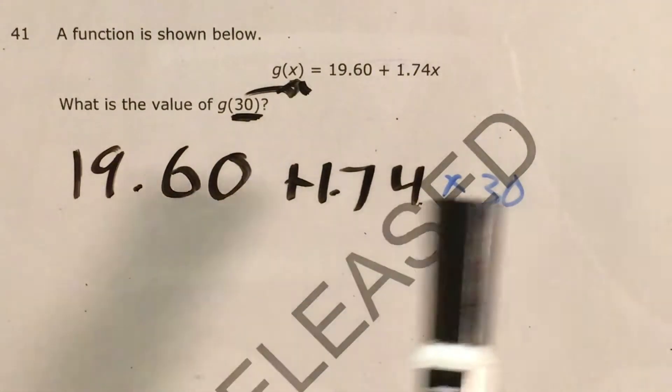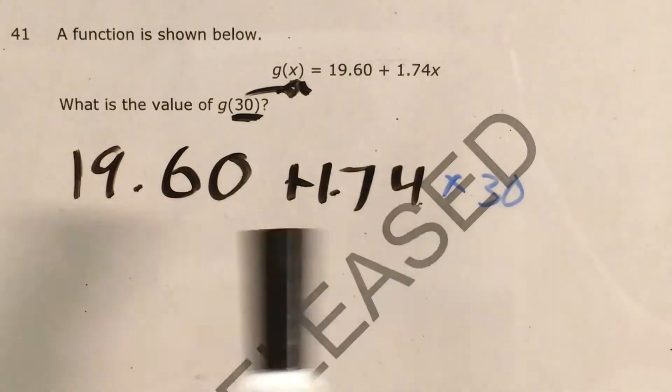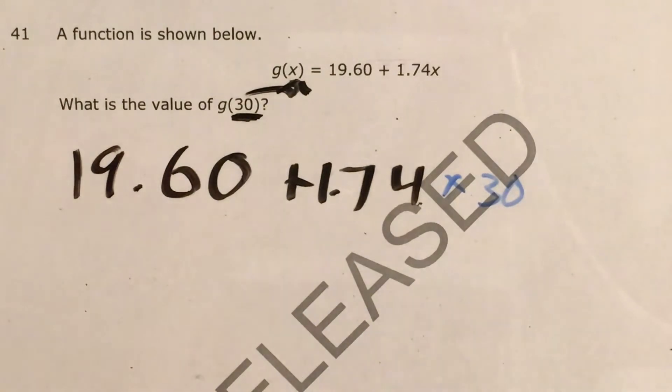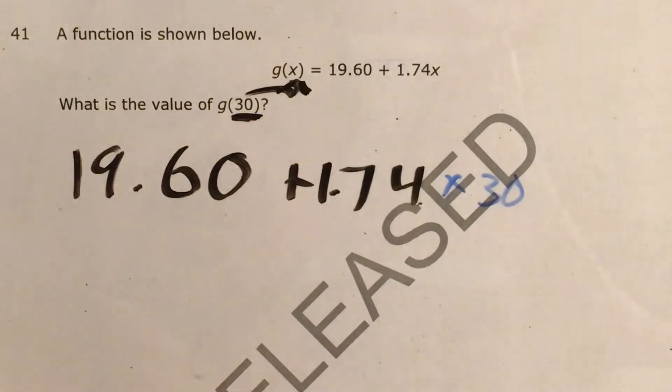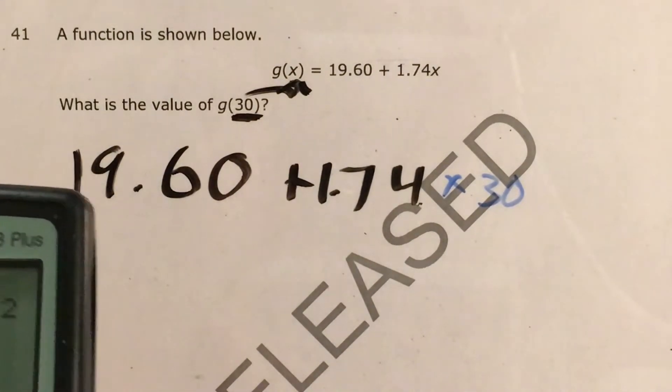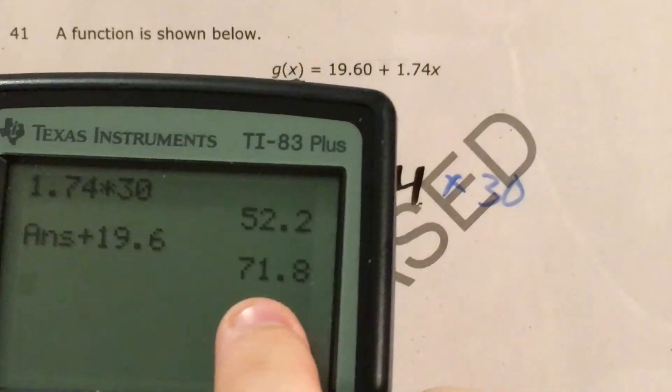Now that I have plugged in the number 30 and I'm going to go ahead and evaluate this, the next big thing to remember is order of operations because I need to multiply these first before I can just add. So that's 1 and 74 hundredths times 30 plus 19.6. And my final answer is 71 and 8 hundredths.